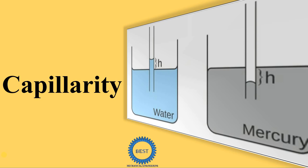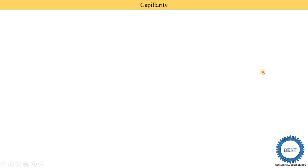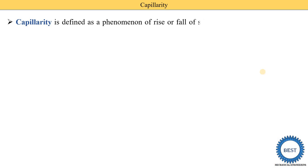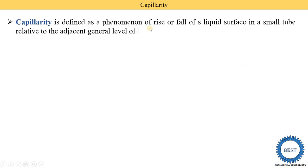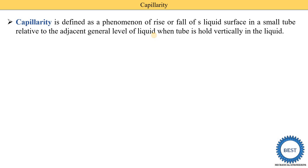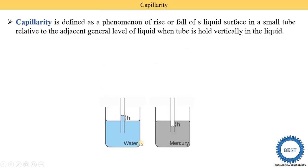In this video I explain about capillarity. First we understand the introduction and definition of capillarity, then we study a few applications of capillarity, and then we derive the expression for capillary rise and capillary fall. Capillarity is defined as a phenomenon of rise or fall of liquid surface in a small tube relative to the general level of liquid when the tube is held vertically in the liquid.